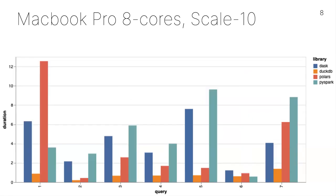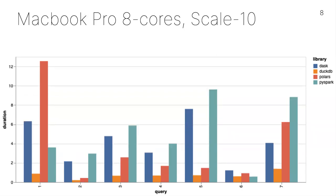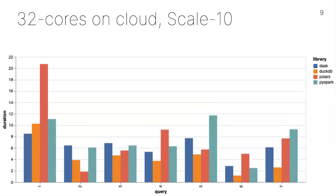Going back to the 10-gigabyte dataset but changing the compute environment — from my MacBook Pro to 32 cores in the cloud. For DuckDB and Polars, those are single machine projects so we're using one 32-core VM. For Dask and Spark, we're also using 32 cores but spread across eight VMs of four cores each. Everything is more normalized, variance is lower. DuckDB and Polars still do quite well; Dask and Spark have decreased their lag.